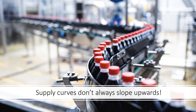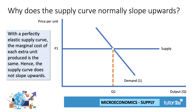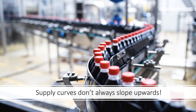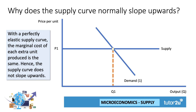Now, supply curves don't always slope upwards — that's an important factor to bear in mind. It does depend on the elasticity of supply. It could be the case that you have a perfectly elastic supply curve. For example, the manufacturing of Coke bottles or cans of drinks — essentially each of those bottles costs exactly the same to produce. You may have seen TV programmes like Inside the Factory, focusing on the nature of mass production, where essentially the supply curve in a given period is flat. They can increase supply to meet demand, so if demand increases from D1 to D2, the price remains the same at P1.